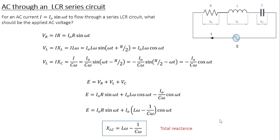In the last class, we analyzed AC flow through LR and CR circuits. In the LR circuit, the applied voltage leads the current by an amount phi, whereas in the CR circuit, the voltage lags behind the current by the same phase angle phi. Today, let's analyze AC flow through an LCR circuit, where a resistor R, inductor L, and capacitor C are connected in series to an AC power supply.